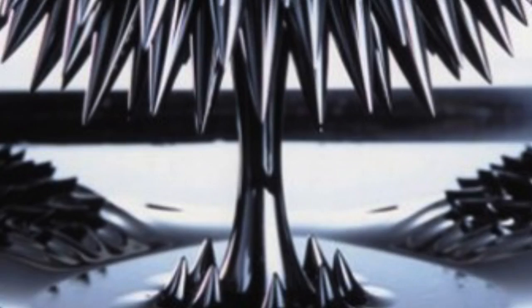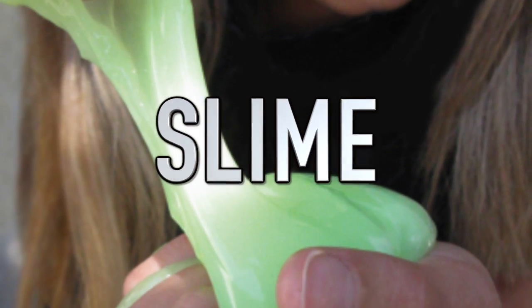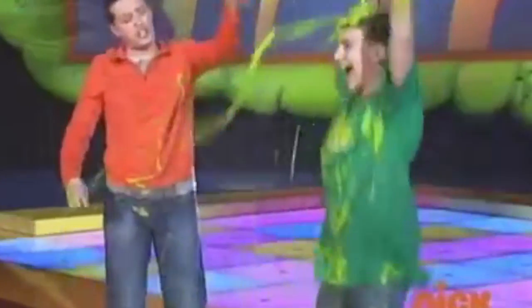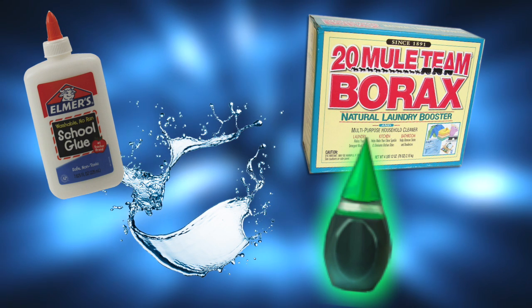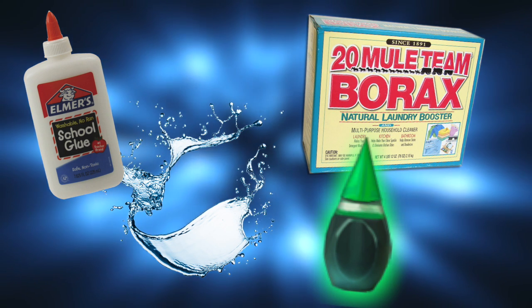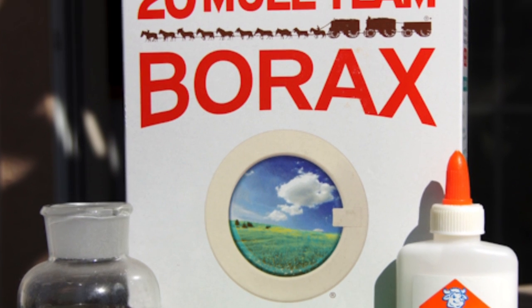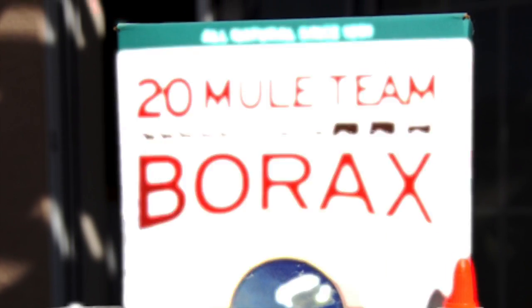Next up we have slime. If you guys watched Nickelodeon when you were kids, you'll remember the slime they used to use. Well, now you can make it at home. Except this slime is even better. You'll need some water, food coloring, liquid glue, and borax. Put some water and borax into a cup and mix it together.